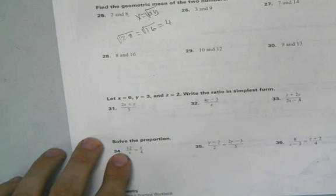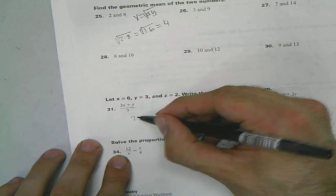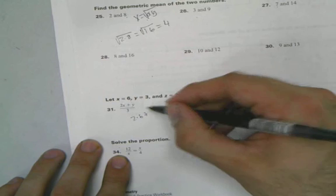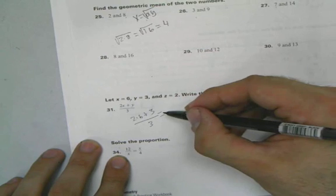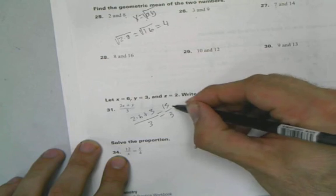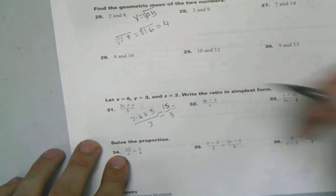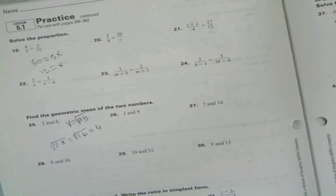Down here it's pretty easy. Just put in 6 for x, 3 for y. 2 times 6 plus 3 divided by 3 is going to equal 12 plus 3 is 15, divided by 3, which equals 5. Finish the homework. And I'll see you in class for the rest of the answers.